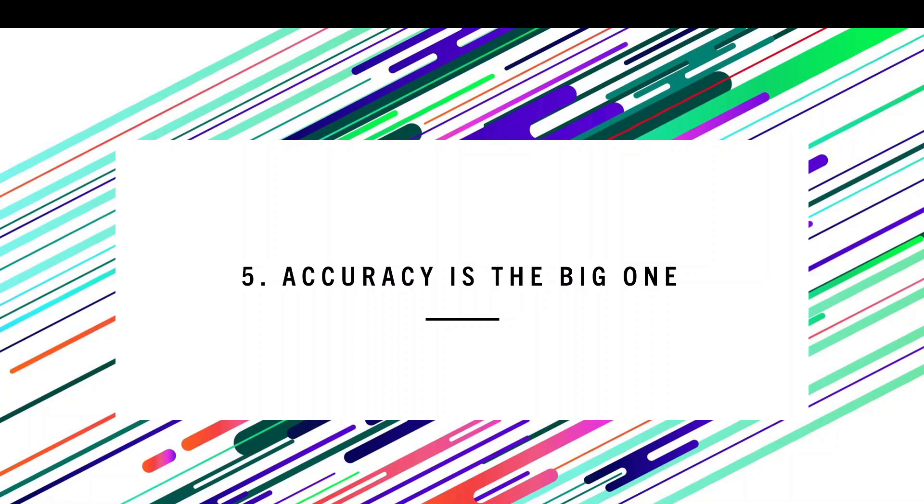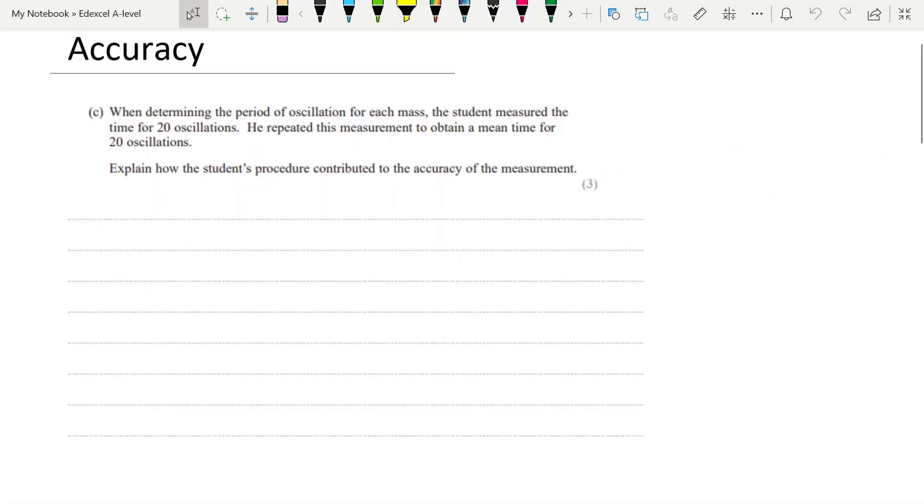The fifth piece of advice here: accuracy is king. So many questions ask you about how you would improve the accuracy or how you would minimize the error so as to improve the accuracy. And let's have a look and see the kind of thing you can be asked. Remembering that accuracy is how close a measurement is to the true value. And there are some things that affect accuracy.